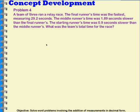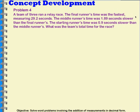This next problem is going to be kind of challenging because it has more than one step. So we're going to do a lot of drawing and writing to help us keep track of where we are. A team of 3 ran a relay race. The final runner's time was the fastest, measuring 29 and 2 tenths seconds. The middle runner's time was 1 and 89 hundredths seconds slower than the final runner's. The starting runner's time was 0 and 9 tenths seconds slower than the middle runner's. What was the team's total time for the race?